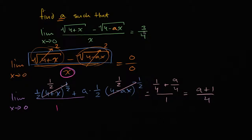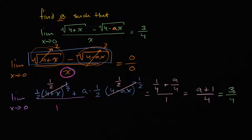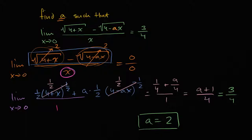And we said this needs to be equal to three fourths — that was our original condition. So a plus one over four equals three fourths, which means a plus one equals three, so a equals two. And we are done.